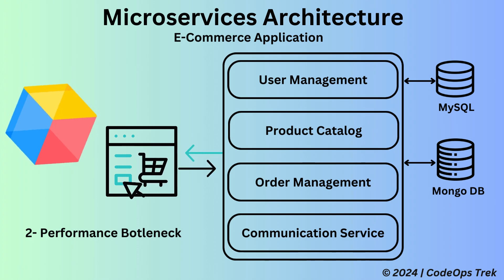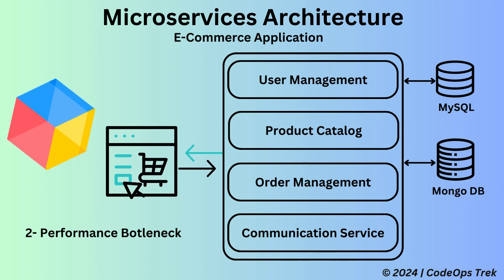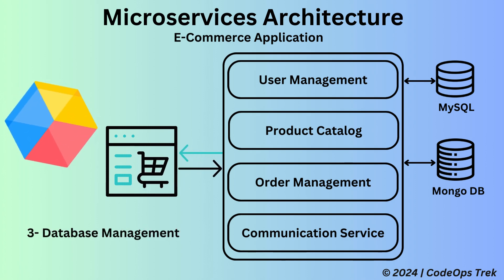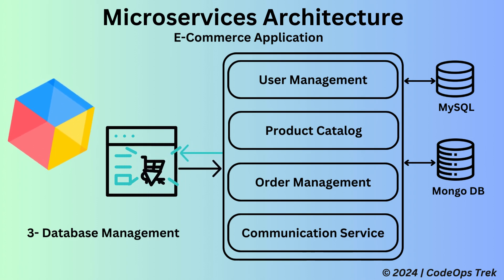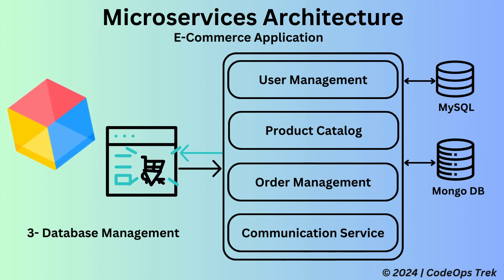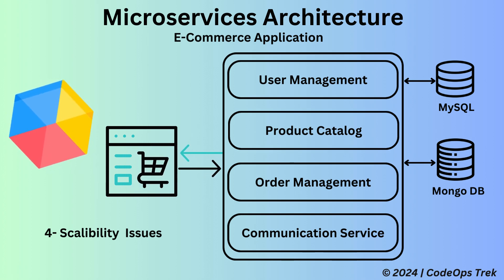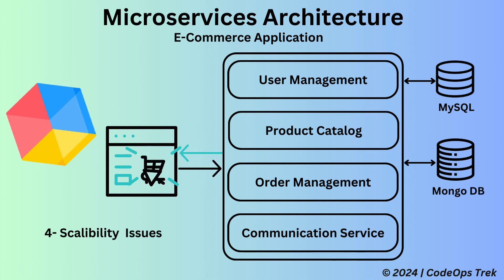Second is performance bottlenecks — as the application scales, performance issues can arise. High traffic on the product catalog or order management services can slow down the entire system. Third is complex database management — using both MySQL for user management and MongoDB for product and order information adds complexity, and synchronizing and managing two different databases can be challenging. Fourth is scalability issues — scaling the application as a whole is difficult. If you need to scale the product catalog service, you have to scale the entire application, which is inefficient.